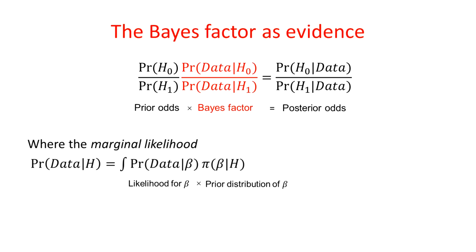And these probabilities are calculated as marginal likelihoods. We take the probability of the data under the parameter beta and we integrate that probability over a prior distribution for the parameter.